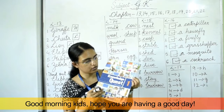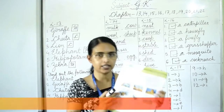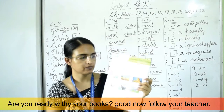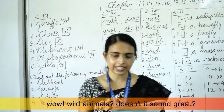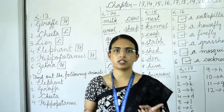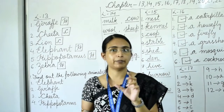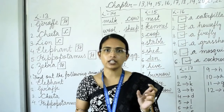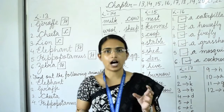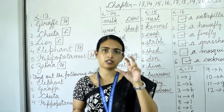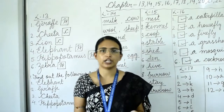Hello students, take out your GK book — Knowledge Quest. Today we will start from lesson 13, page number 17. In this chapter we will learn about wild animals. There are three types of animals: carnivorous, herbivorous, and omnivorous. Carnivorous animals are those who eat meat only, like cheetah and lion. Herbivorous animals eat grass, leaves, roots, stems — plants or vegetables.